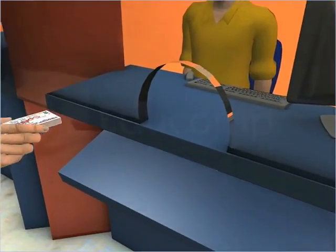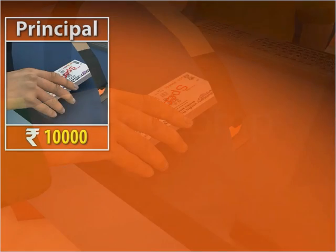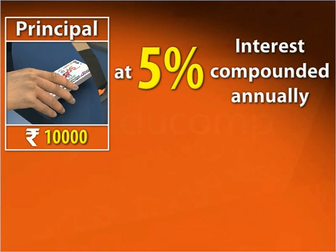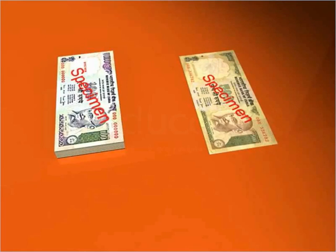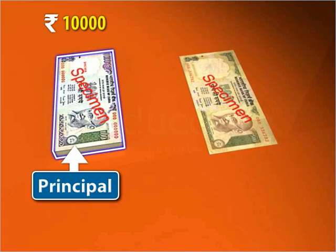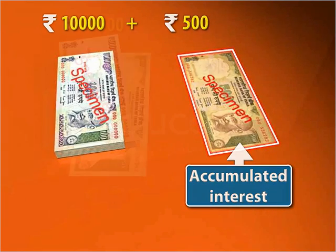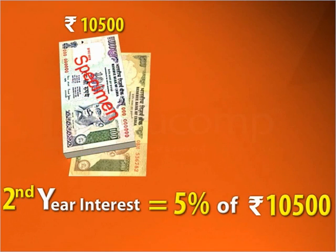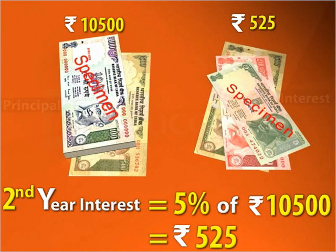Suppose you deposit 10,000 rupees into a savings account at an interest rate of 5% compounded annually for 3 years. In the second year, you earn interest on the principal as well as on the accumulated interest. Thus, you earn 5% of 10,500 rupees, which is equal to 525 rupees.